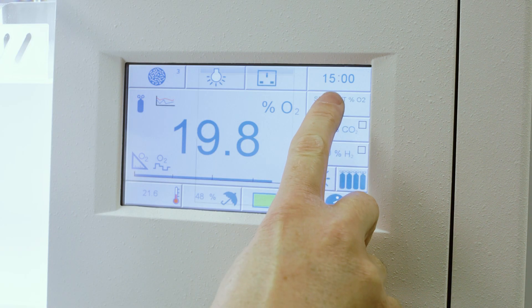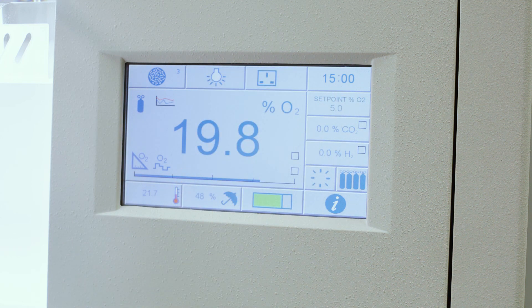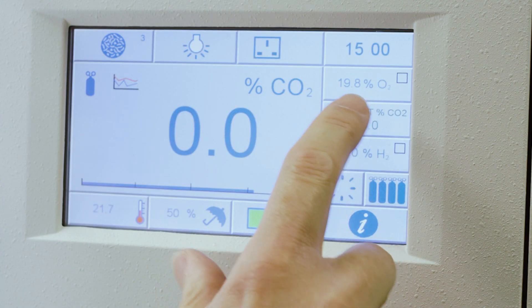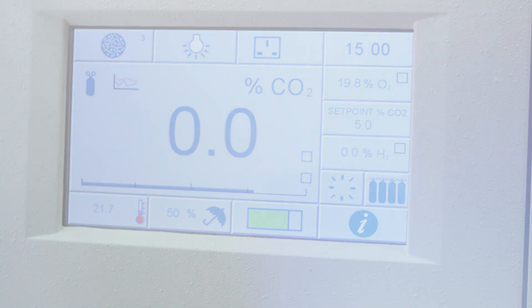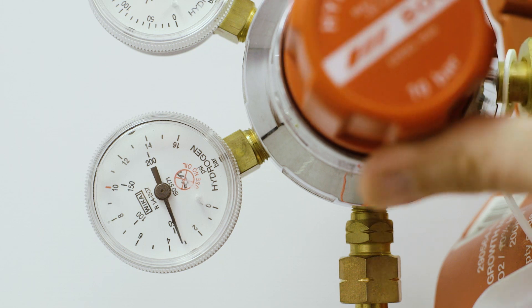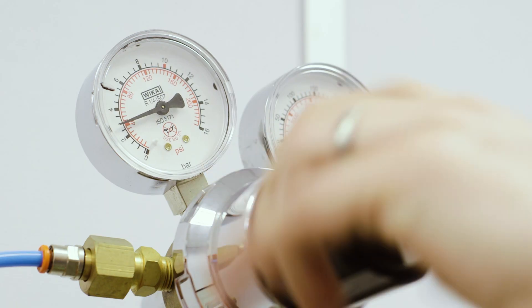Our microaerobic workstations control oxygen, CO2 and hydrogen via gas sensing technology. Up to four gases, nitrogen, carbon dioxide, air and a 10% hydrogen, 90% nitrogen mix can be combined within safe and varying ratios to provide the most appropriate incubation atmosphere for your organisms.